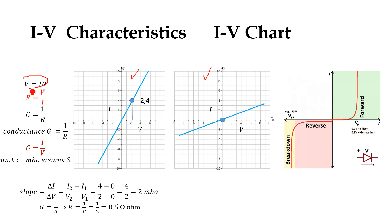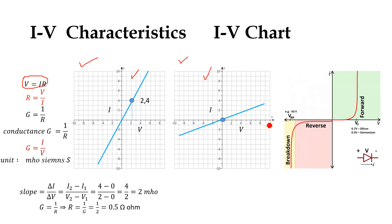Current times resistance equals voltage. Any semiconductor or conductor which obeys Ohm's Law is known as an ohmic conductor. These two examples are ohmic semiconductors because we see that the increase in current is linear with the increase in voltage. Similarly, in this case, the current is linearly increasing with the increase in voltage.